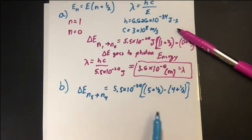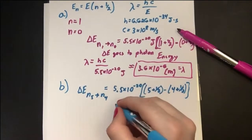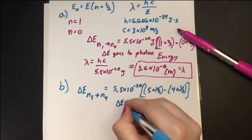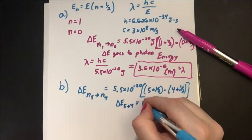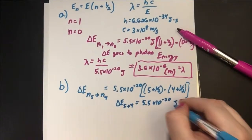So solving this again, we see that the 1/2s cancel and 5 minus 4 is 1. So our change in energy again from 5 to 4 is still 5.5 × 10⁻²⁰ joules.